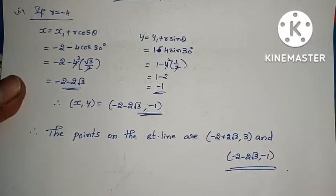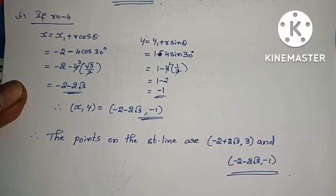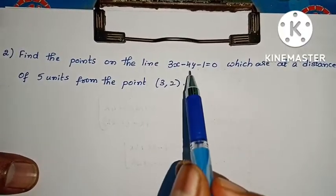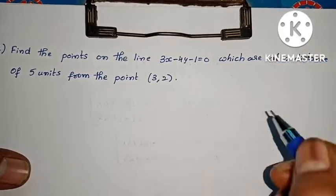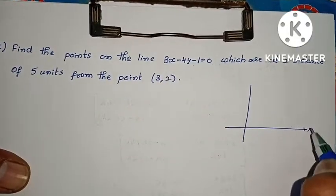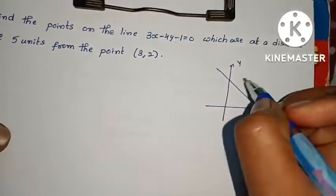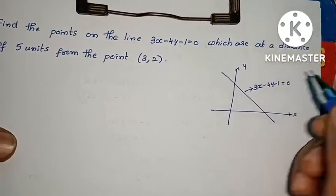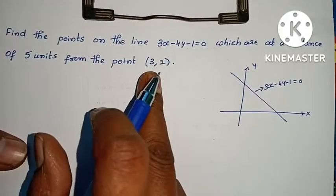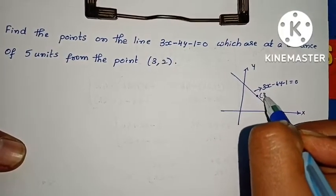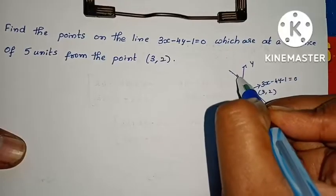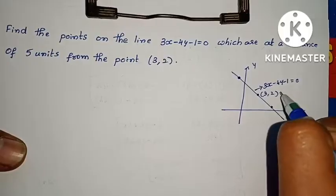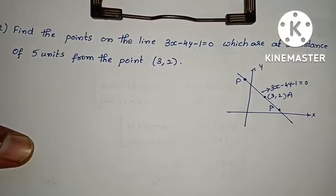Next problem: find the points on the line 3x - 4y - 1 = 0. On the xy-axis we have this straight line equation 3x - 4y - 1 = 0, and we need points which are at a distance of 5 units from the point (3, 2). These are the required points on the line.